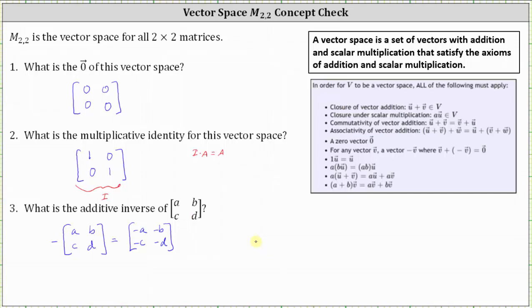So we can quickly see if we take the given matrix and add the additive inverse, the sum is the zero vector for the vector space or the two by two matrix with all zero entries. I hope you found this helpful.